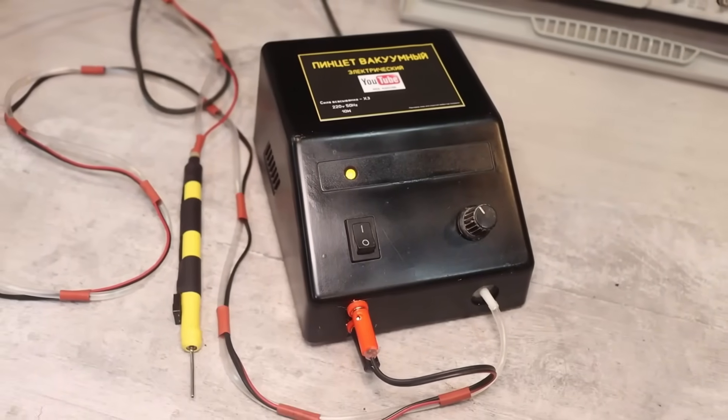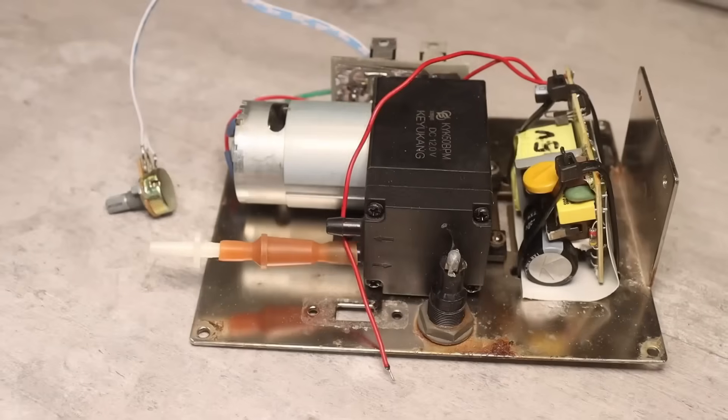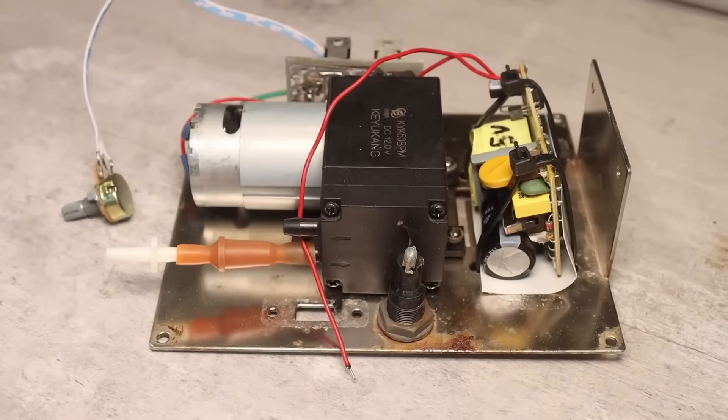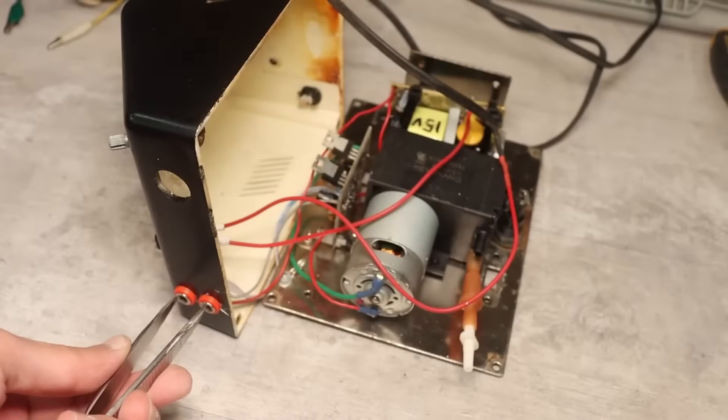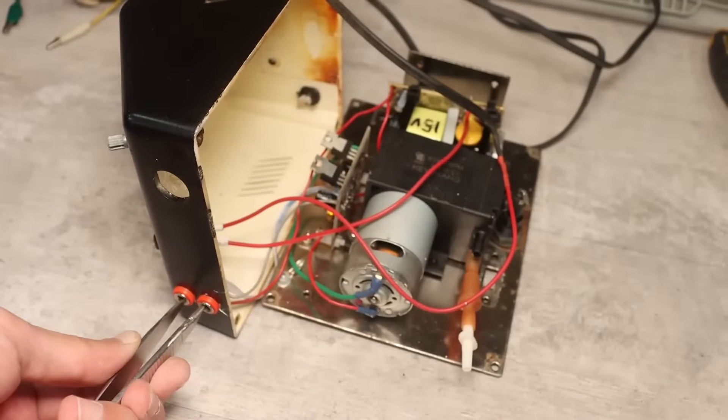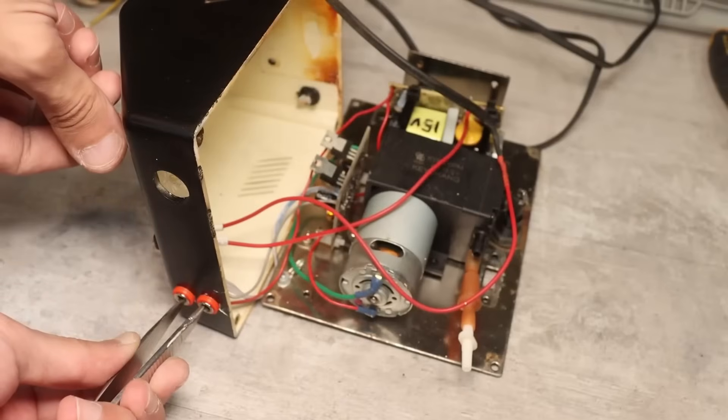Advantages. The thing can actually be assembled in half a day with minimal costs. The power source can be anything, including an iron transformer of 15 to 20 watts, supplemented with a rectifier and a smoothing capacitor.